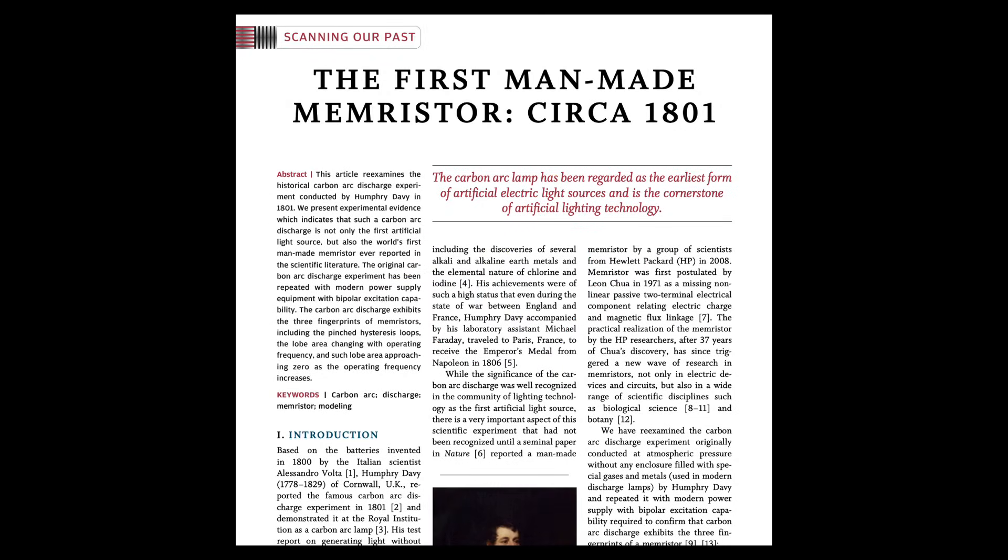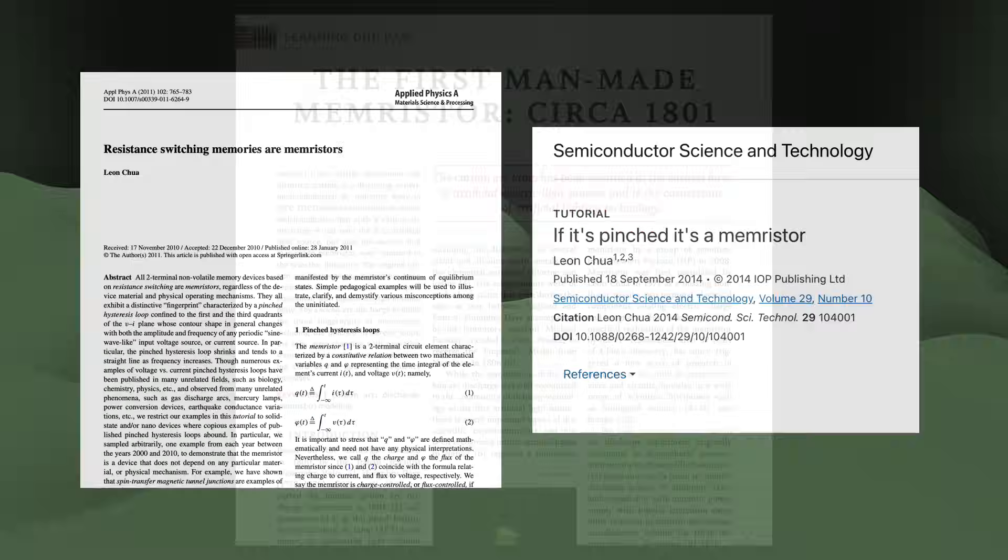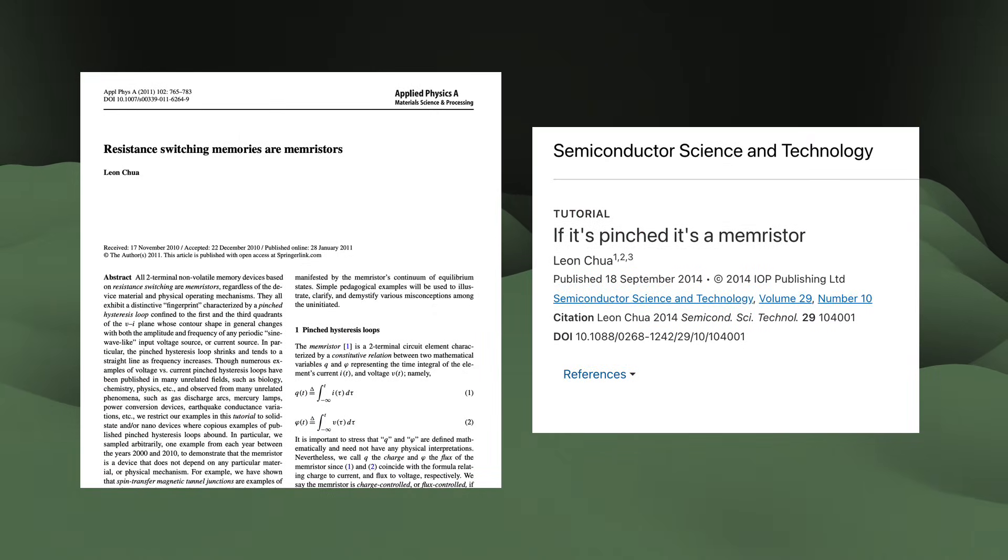There are other examples even further back in history. For instance, one claim of memristors accidentally being invented in a carbon arc-lamp discharge experiment back in 1801. For what it's worth, Chua has declared the 2008 HP semiconductor to indeed be a memristor, but he changed his previous definition to do so, calling all memory devices based on resistive switching memristors, regardless of the relationships between charge and magnetic flux and all that.